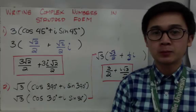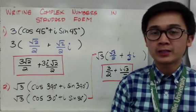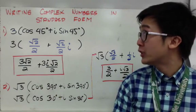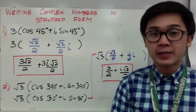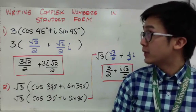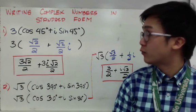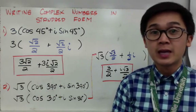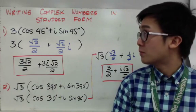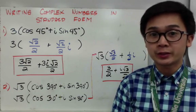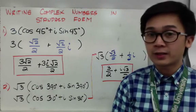Today we're going to learn how to multiply and divide complex numbers in trig form. But before that, let's learn how to change our complex number into its standard form. All you have to do is use your unit circle and find the actual value of the given angle.